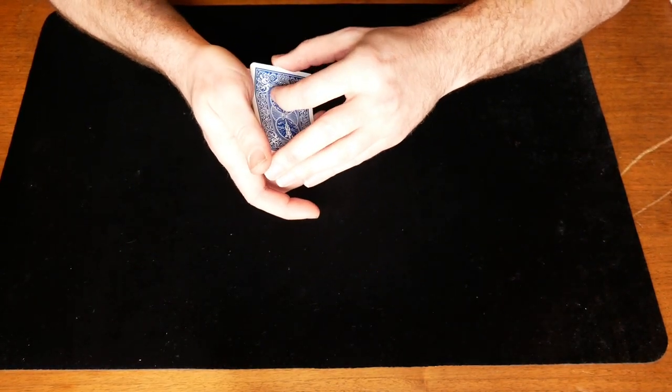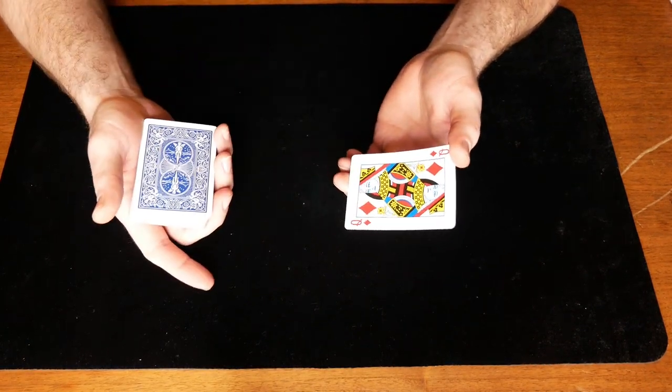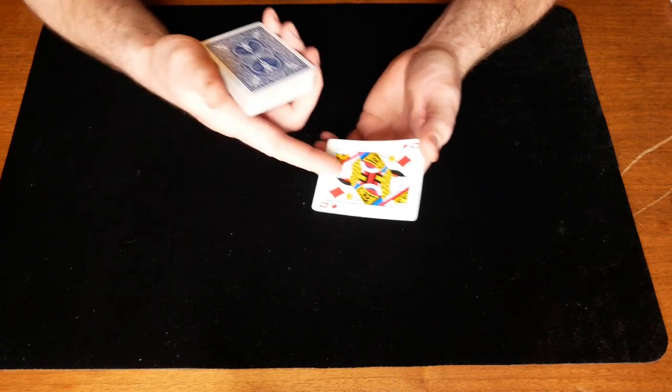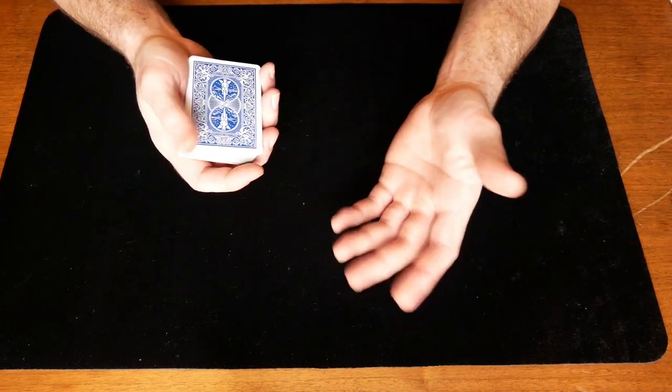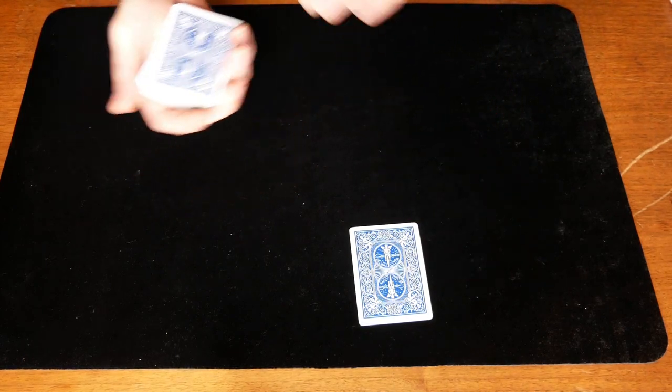You then take the top card of the deck, show it to them. You say, well this is a queen of diamonds. This isn't your card, right? And they'll say no. You say, okay, well hold your hand out for a second. Let me put that queen of diamonds here and sandwich it between your hands so I can't get to it.